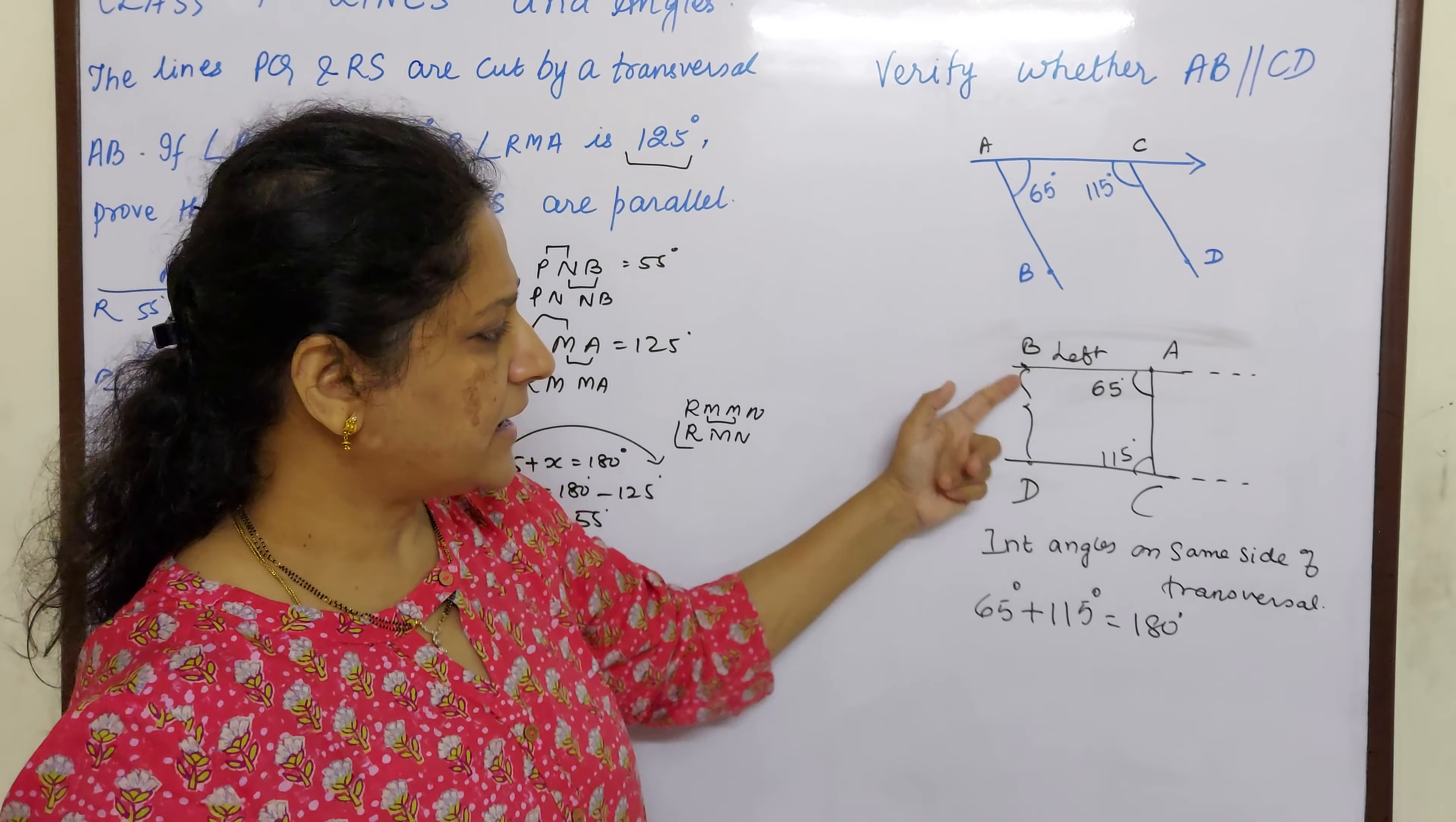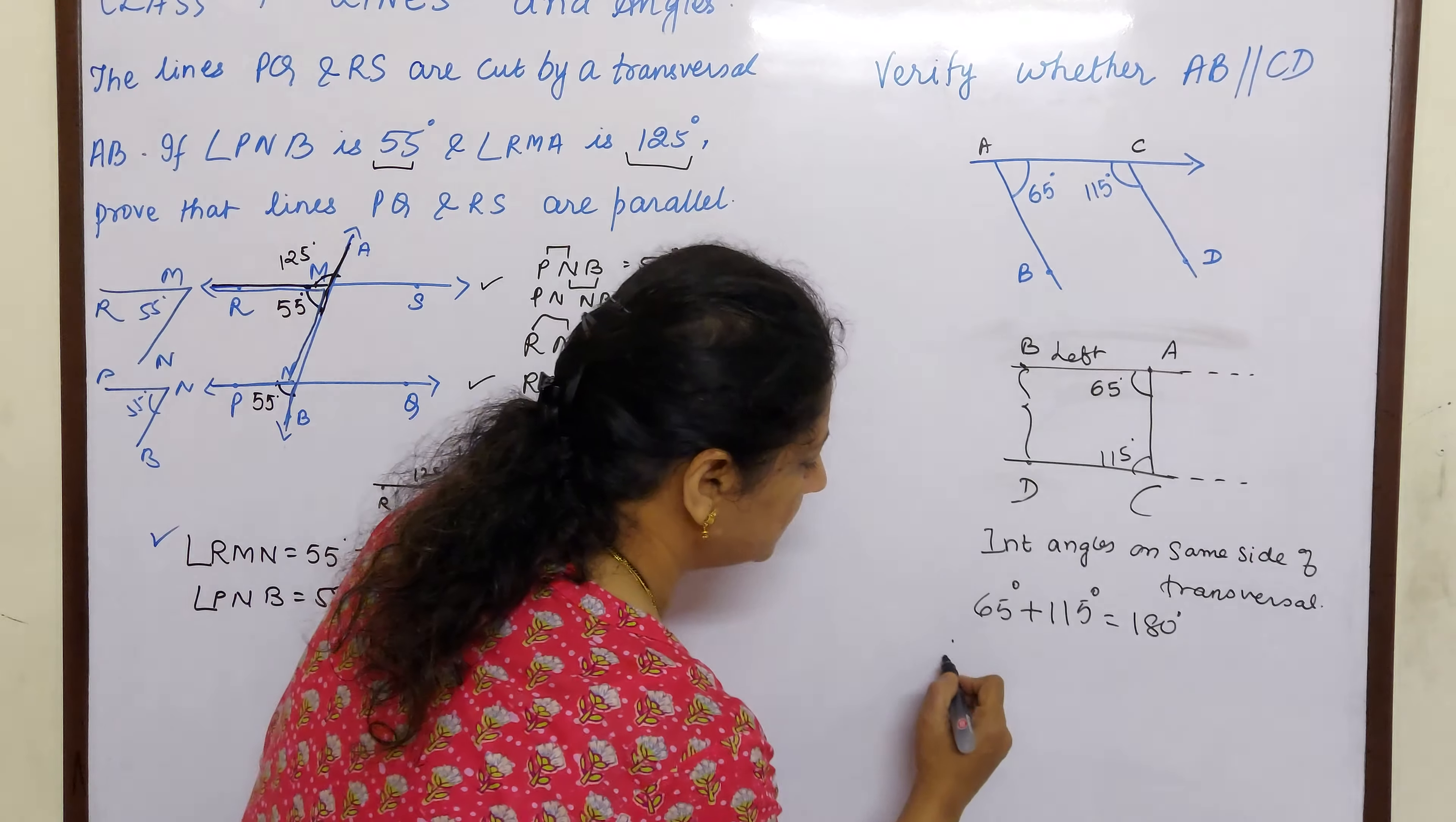That means interior angles on the same side of the transversal are supplementary. Then what can you say about these two lines? AB is parallel to CD.